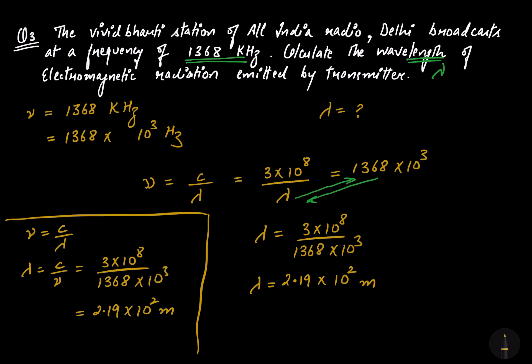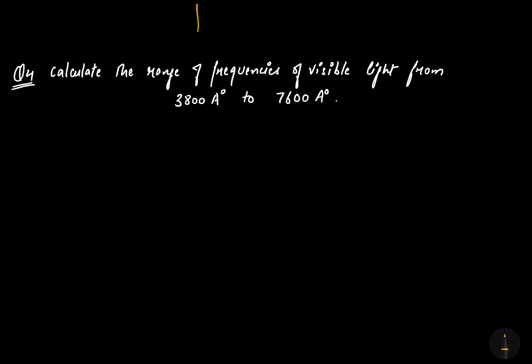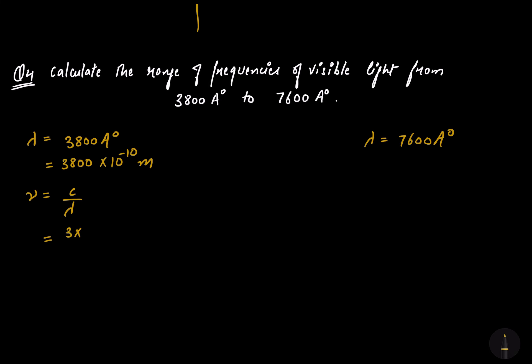Now let's move to the fourth numerical. The question asks: calculate the range of frequency of visible light from 3800 angstroms to 7600 angstroms. First, converting 3800 angstroms to meters: 3800 × 10⁻¹⁰ meters. Using nu = C / lambda, with C = 3 × 10⁸ divided by 3800 × 10⁻¹⁰ meters.